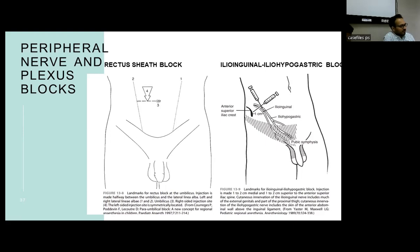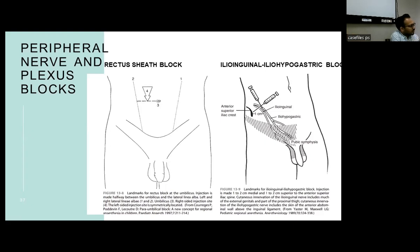For inguinal surgeries such as inguinal hernia or orchiopexy, the ilio-inguinal or ilio-hypogastric nerve blocks are recommended. However, when handling visceral structures like the testis or when operating on hernias, this block is not effective. For those conditions, a spermatic cord block is recommended for intra-scrotal surgeries. The site of injection is 1–2 cm medial and superior to the anterior superior iliac spine, with the needle inserted perpendicular to the skin until a pop is felt just at the external oblique.